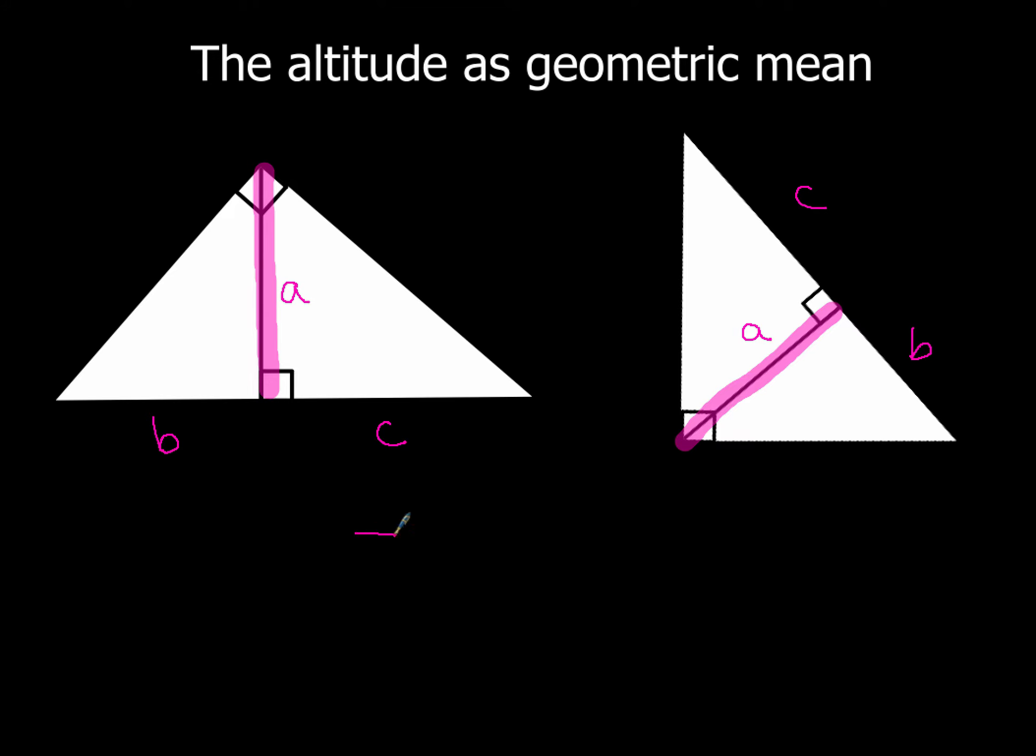Generally speaking, this is how you're going to set up this problem. You're going to set up a proportion. I'm going to use GM for geometric mean and just kind of abbreviate that. So the geometric mean is always going to get slotted in these two spots, and then one part of the hypotenuse is going to go here and the other part is going to go here.